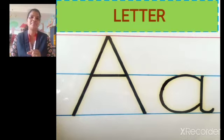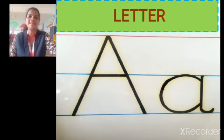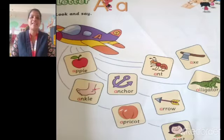A. For example, A, Apple. A, Apple, A, Apple, A, Anchor, A, Ant, A, Alligator, A, Arrow, A, Apricot.